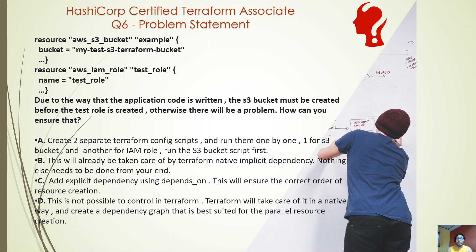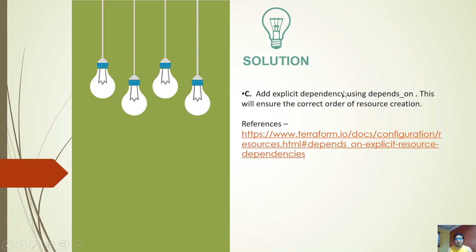So there are two kinds of dependencies. Where there is already implicit dependency, there is no need to clutter your code with explicit dependency — you still can, but there is no need. Where there is no implicit dependency but you need to enforce some sort of ordering, you go with explicit dependency. The answer is: add explicit dependency using 'depends_on' — this will ensure the correct order of creation.